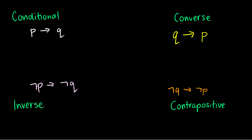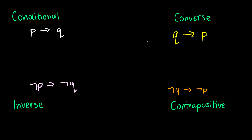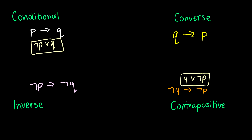So which of these are logically equivalent? The conditional is logically equivalent to the contrapositive. Using the conditional law, P arrow Q is logically equivalent to not P or Q. The contrapositive, not Q arrow not P, is logically equivalent to not not Q or not P. Using double negation, we get Q or not P — and these are logically equivalent.